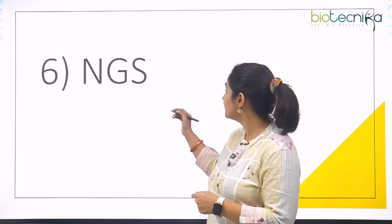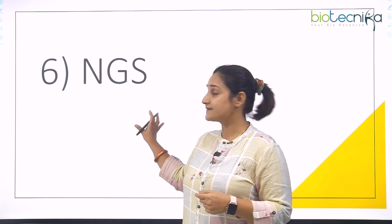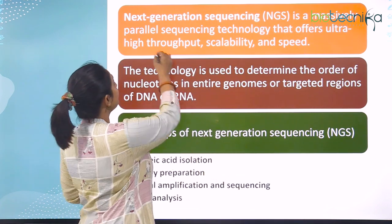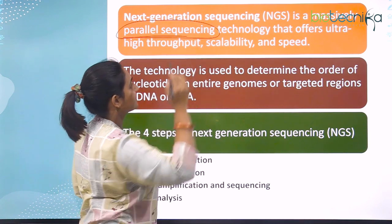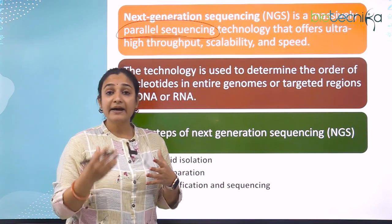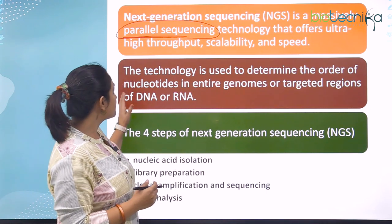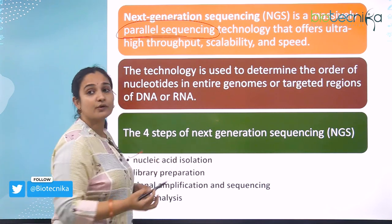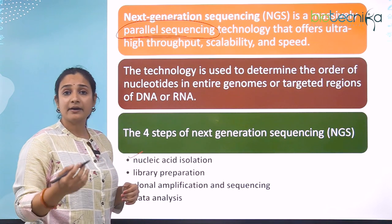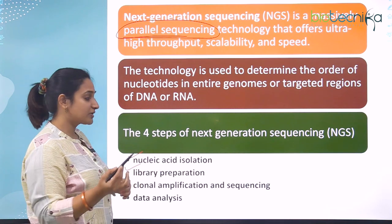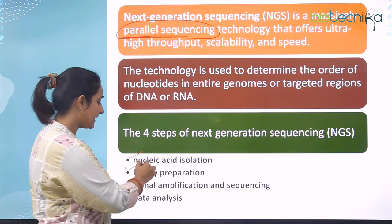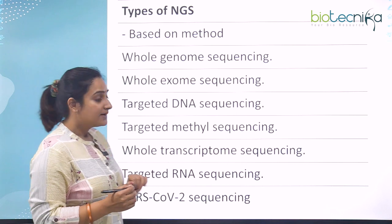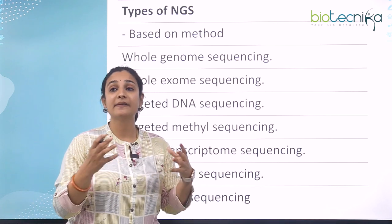The sixth technique is NGS — next generation sequencing. Next generation sequencing is a massively parallel sequencing technique that offers ultra-high throughput, scalability, and speed. There are four steps: isolation of the nucleic acid (DNA, RNA, or any nucleic acid), library preparation, clonal amplification and sequencing, and data analysis.